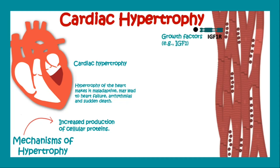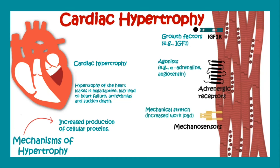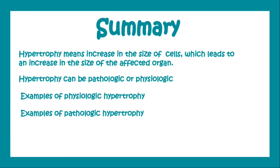The cardiac muscle has receptors like insulin-like growth factor 1 receptor, adrenergic receptors, and mechanosensors. All these receptor signaling pathways play an important role in cardiac hypertrophy. In summary, hypertrophy means an increase in the size of cells, which leads to an increase in the size of the affected organ.